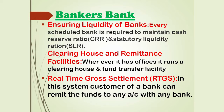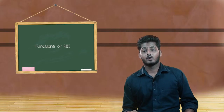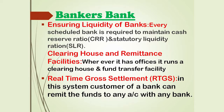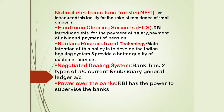The next point is clearing house and remittance facilities — wherever it has offices, it runs a clearing house and fund transfer facility. The next point is Real Time Gross Settlement, known as RTGS, where customers of a bank can remit funds to any account with any bank. The next point is National Electronic Fund Transfer, known as NEFT — RBI introduced this facility for the remittance of small amounts.